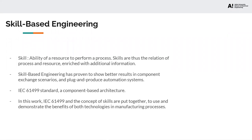Skills are an ability of a resource to perform a process. Skills are the relation of process and resources enriched with additional information. Skill-based engineering has proven to show better results in component exchange scenarios and plug-and-produce automation systems. The IEC 61499 standard, a component-based architecture, has proven to be beneficial to improve flexibility and modularity in industry as well as improve distributed automation scenarios.